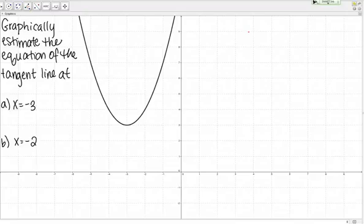Let's start with part A, X equals negative 3. I'm trying to write the equation of the tangent line at the point X equals negative 3, which is right here. My first step is just going to be to try to sketch the tangent line.